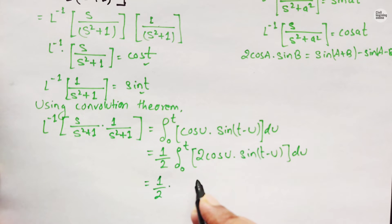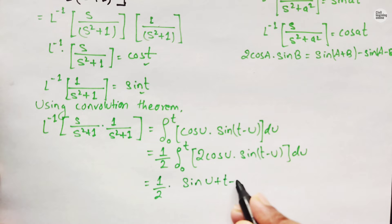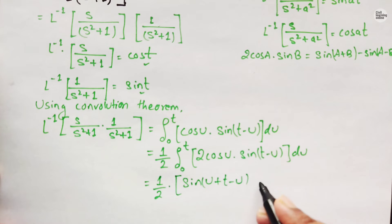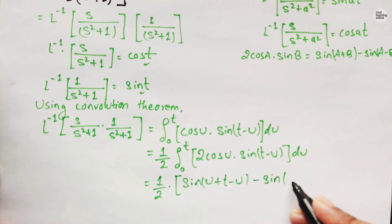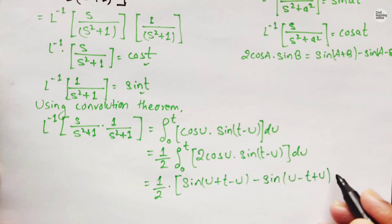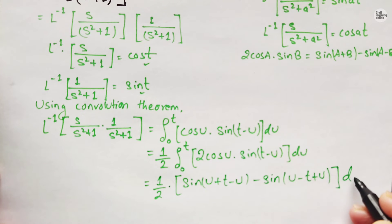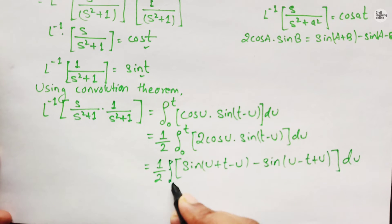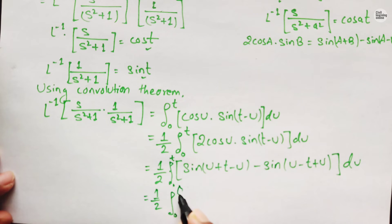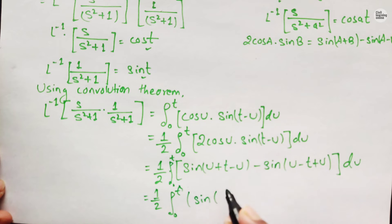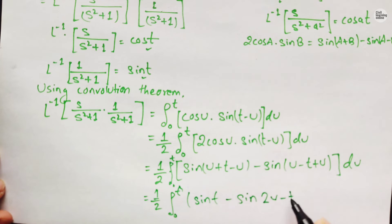Now we can apply the formula, giving us (1/2) times the integration from 0 to t of [sin(u + t − u) − sin(u − t + u)] du. Simplifying inside the bracket: u and −u cancel in the first term, giving sin(t), and the second term becomes sin(2u − t). So we have (1/2) times the integration from 0 to t of [sin(t) − sin(2u − t)] du.